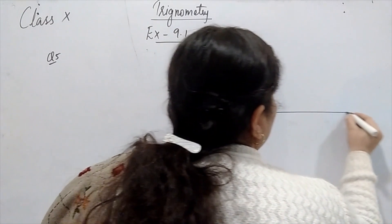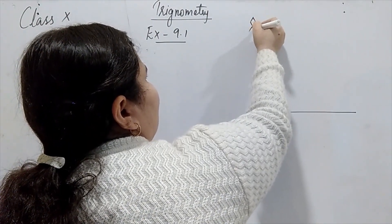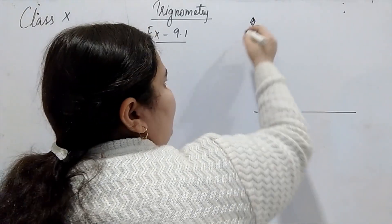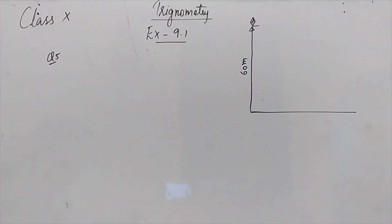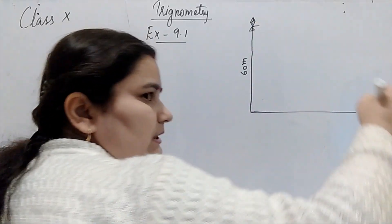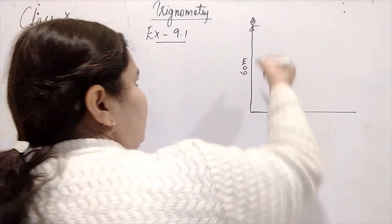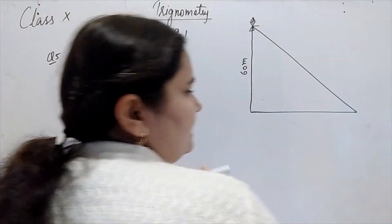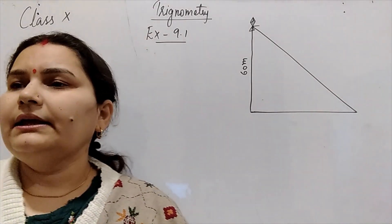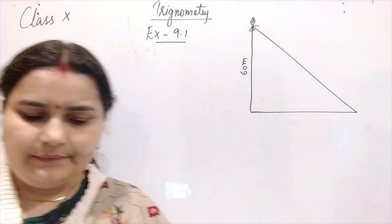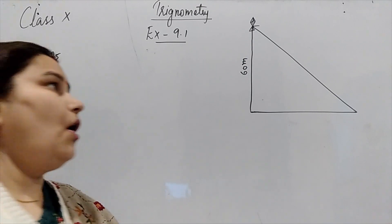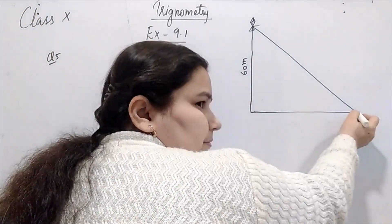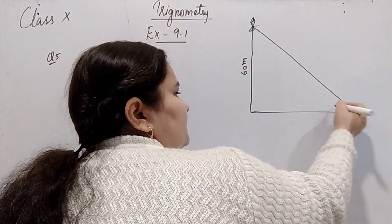So I made a ground here, and you can understand that this is a kite. This kite is 60 meters from the ground. The string attached to the kite is tied tightly to a point on the ground so that it does not have any slack — it is straight. The inclination of the string with the ground is 60 degrees, so at this point it becomes 60 degrees.